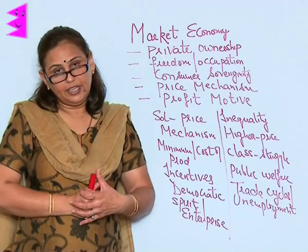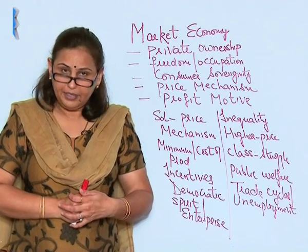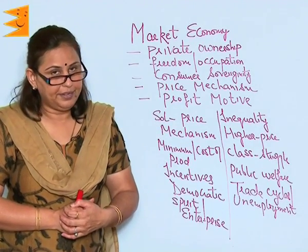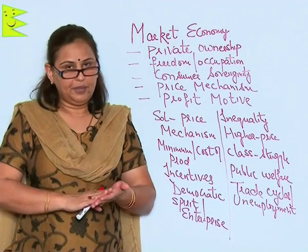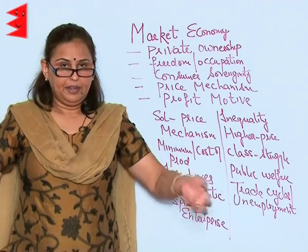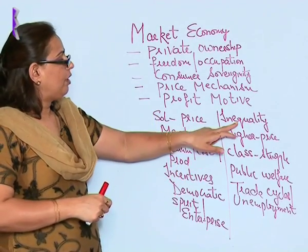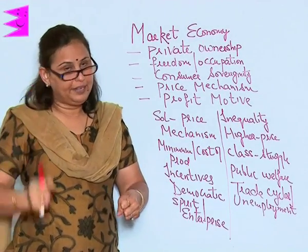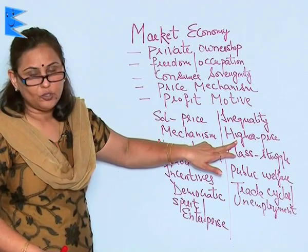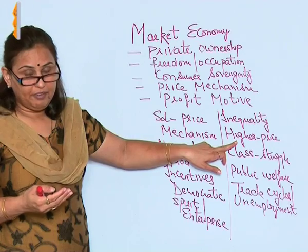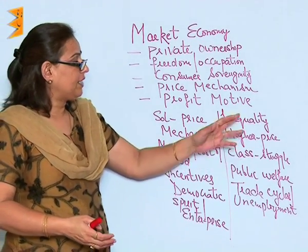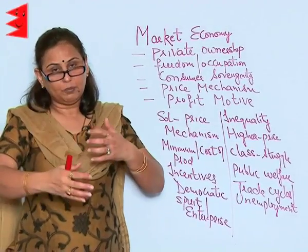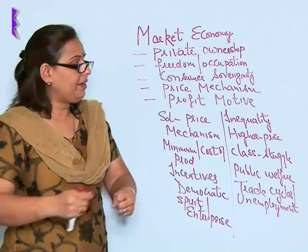This economy also comes with demerits. The first glaring demerit is inequality — the rich become very rich and the poor become very poor, because there is the owner and there is the worker. Higher prices also start coming up because everybody wants to make more profit, setting prices at a higher limit. Class struggle starts between the haves and the have-nots, the employer and the employee.